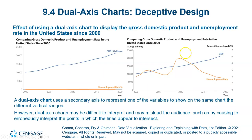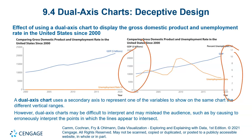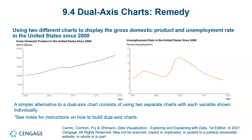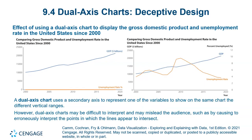Deceptive design is another issue. Here you have two y-axes, while here you have only a single y-axis. Using dual y-axes is a deceptive design that should be avoided to prevent giving a wrong story to the audience. The remedy is simply to split the chart into two separate charts.